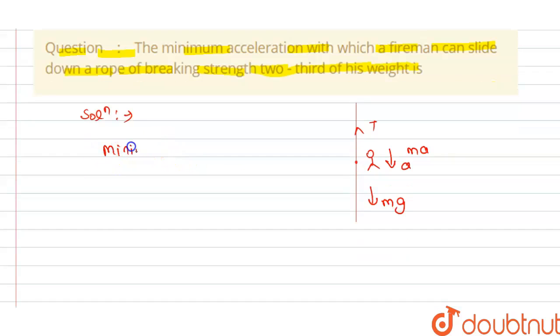So we can write here minimum acceleration is equal to tension in rope and this will equal to two by three times mg.